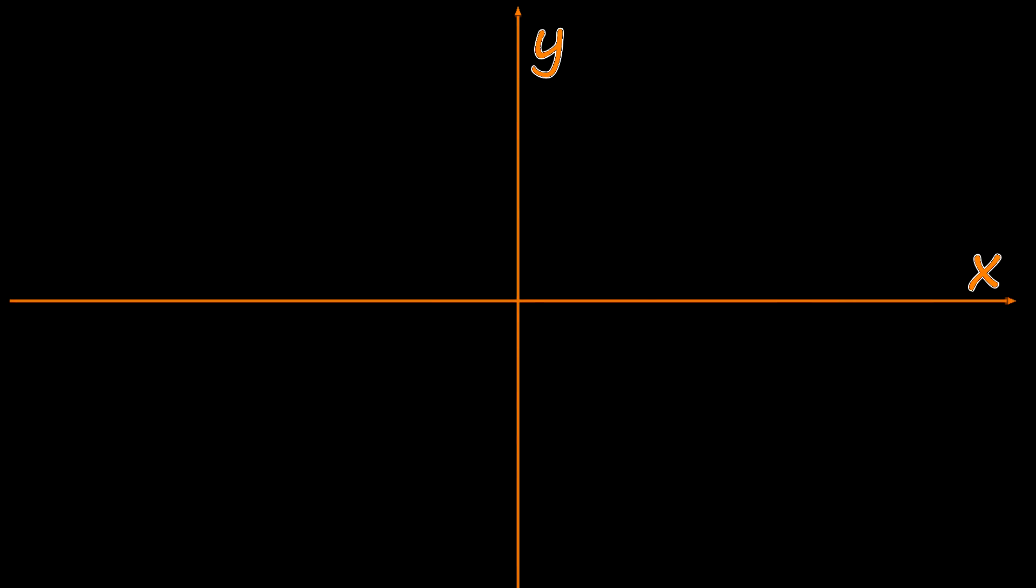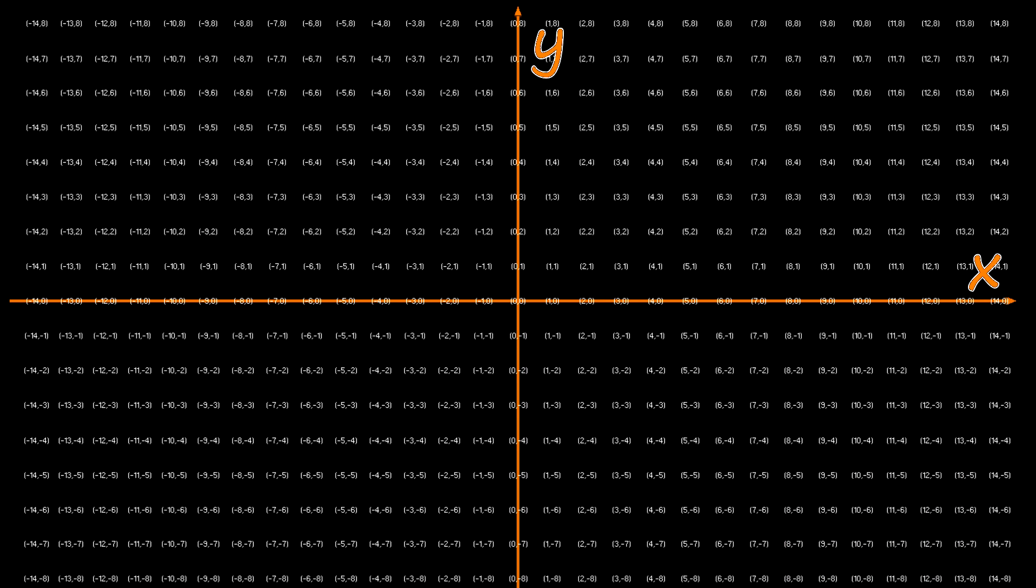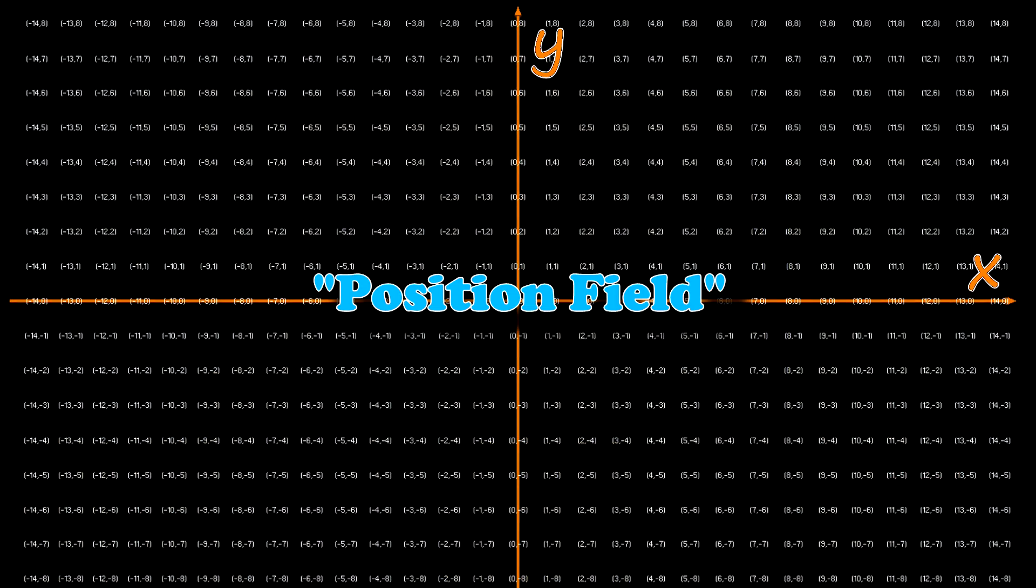In the vectors video, we said position was a way of assigning numbers to places. All the places! This has the benefit of turning geometry into algebra and arithmetic. A field is the same thing. In fact, you could call this a position field, although no one ever does. It even looks like a field.